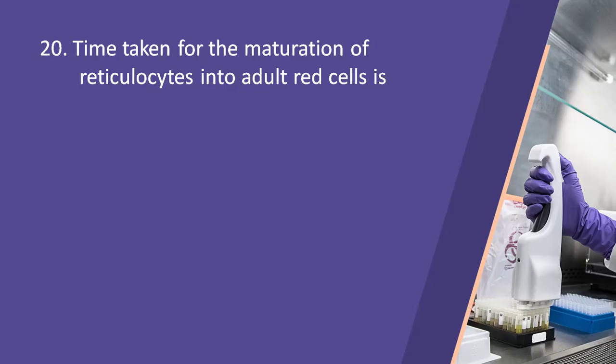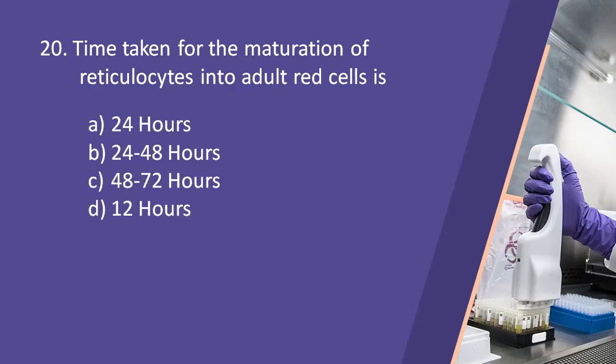Next question: time taken for maturation of reticulocytes into adult red blood cells is? Option A, 24 hours. Option B, 24 to 48 hours. Option C, 48 to 72 hours. Option D, 12 hours. The right answer is option B, 24 to 48 hours. Reticulocytes are immature red blood cells that mature into complete red blood cells within 24 to 48 hours.